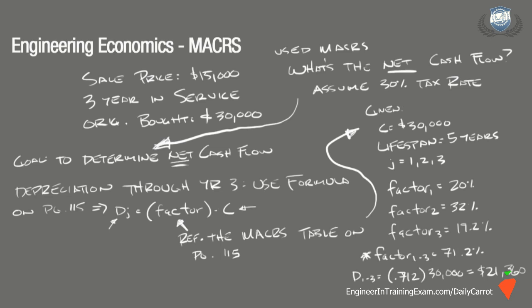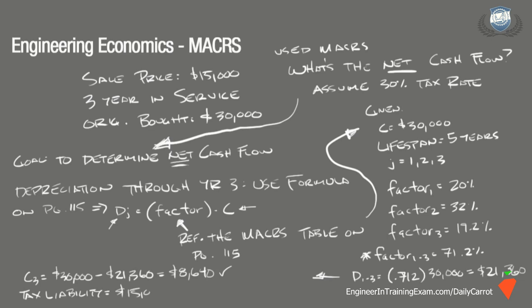The basis in the equipment at the time of the sale is $30,000 minus $21,360, so the basis is $8,640. Since the equipment was sold for $15,000, the tax liability is $15,000 minus the basis of $8,640, which is equal to $6,360. This is the firm's gross cash flow before taxes.